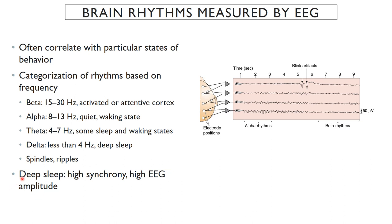Deep sleep is characterized by very high synchrony. While different electrodes aren't terribly synchronous during waking, in deep sleep you see much higher synchrony across all electrodes and very high EEG amplitude, with deflections going up and down much larger than during waking.